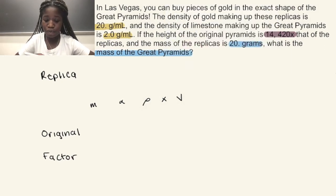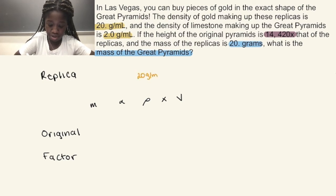Now let's input the information that we know. The density of gold is 20 grams per milliliter and that's what's making up the replica. The density of limestone is 2 grams per milliliter and that's in the original.